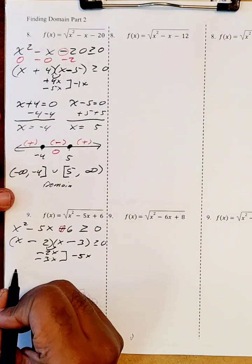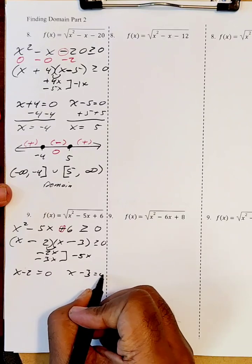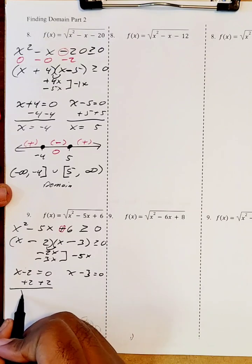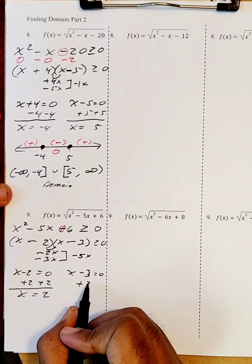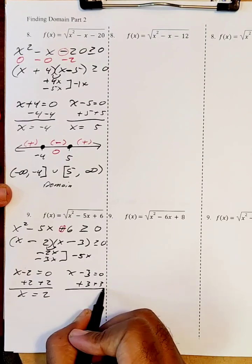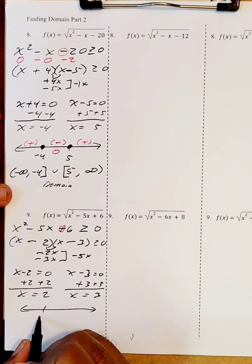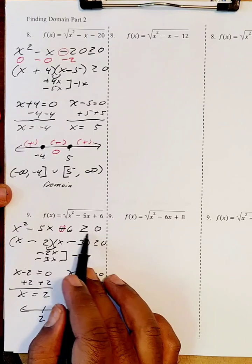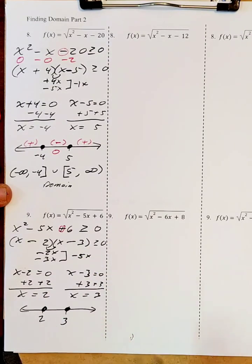I take x minus two, set that equal to zero, and x minus three, set that equal to zero, and solve for x. Adding two to both sides gives x equals two. Adding three to both sides gives x equals three. Put those on the number line — two and three — and because we have the equals sign, we fill them in with solid circles.